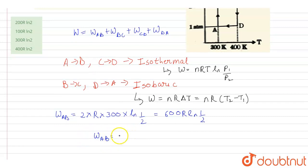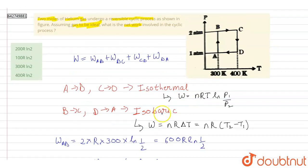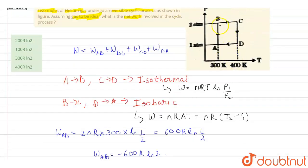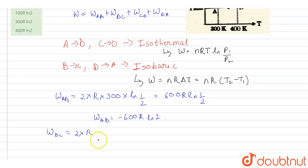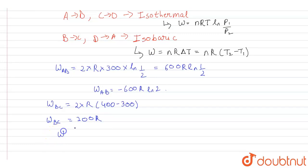Work done from B to C: this is an isobaric process, so W_BC = nR(T2 − T1) = 2 × R × (400 − 300) = 2 × R × 100 = 200R.